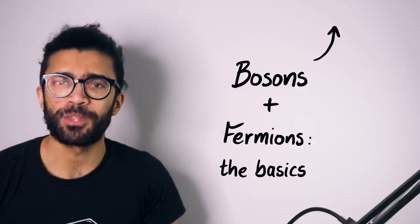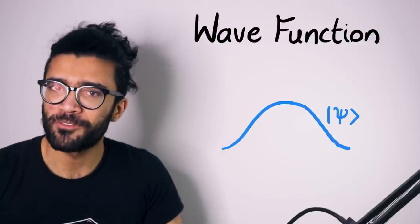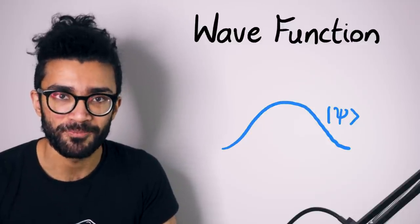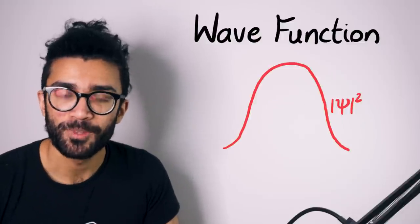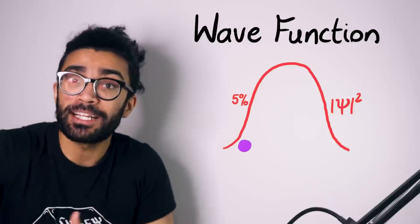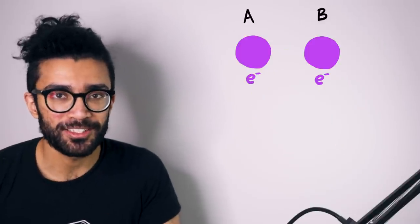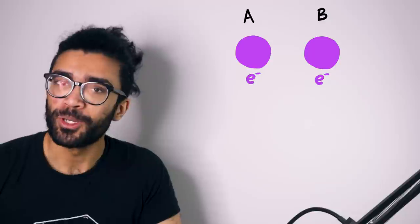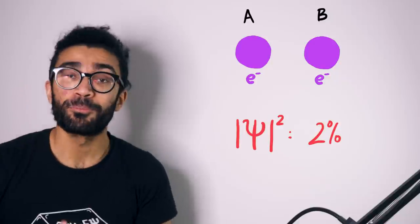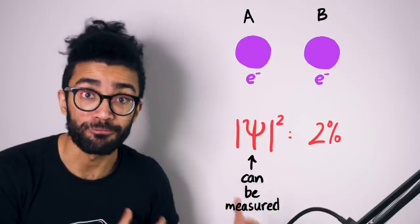In quantum mechanics, with any system that we happen to be studying, we work with what's known as its wave function. This can be thought of as a mathematical function that contains all of the information we know about that system. When we take this wave function and we square it — technically we find its square modulus — this gives us information like how likely we are to find the system in a particular location in space. For the two-electron system, we could calculate the likelihood of finding one electron in this location and one electron in another location.